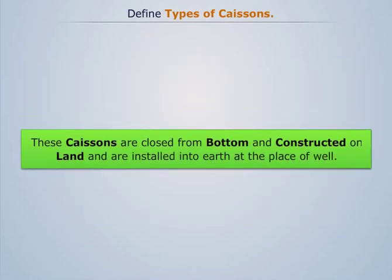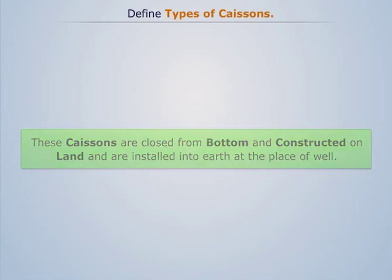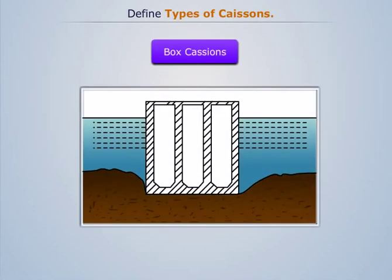Box caissons are closed from the bottom and constructed on land, then installed into the earth at the place of the well. The sectional view of installed box type caissons is shown in the image.